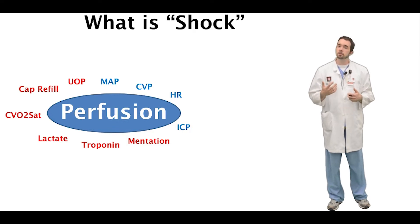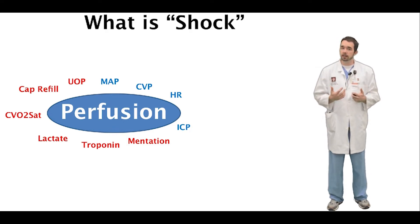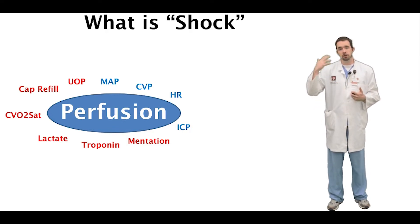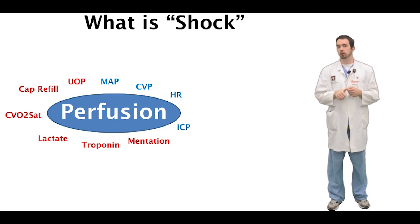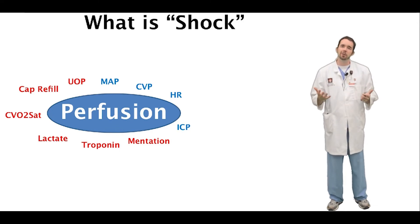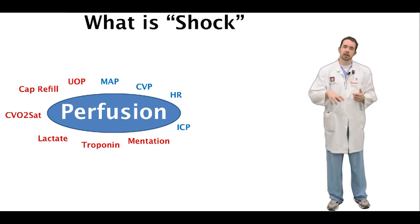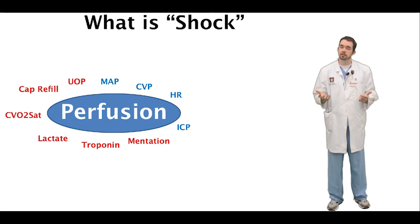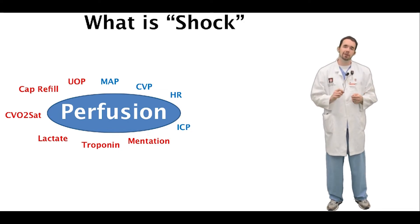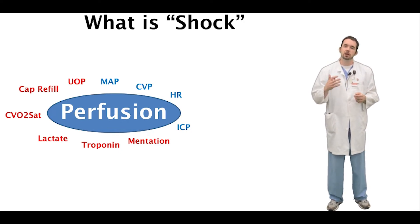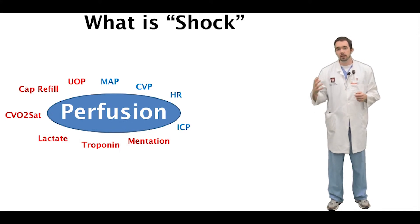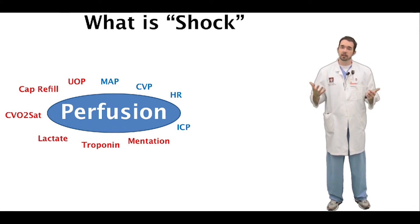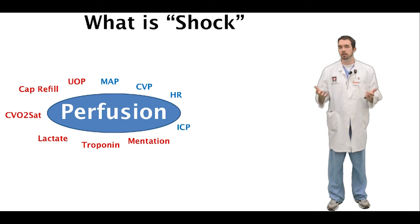On exam, these patients can have altered mental status from malperfusion to the brain, or sometimes we see clinical exam changes like altered cap refill times. Another important thing to assess is the urine output. Urine output tapers off when perfusion to the kidneys is decreased. We like to see urine output of at least half a ml per kilogram per hour. Anything less than that can be a poor sign that your patient is experiencing ischemia to the kidneys.